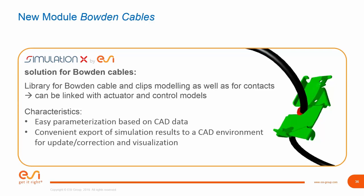The Bowden cable solution includes libraries for Bowden cable modeling, clip modeling, and modeling contact between the Bowden cable and other geometries. As is typical in SimulationX, it is not a standalone module — you can link it to actuators and controls for an overall view of system behavior. The module also features easy parameterization based on CAD data: you can import Bowden cable CAD data into SimulationX, run the simulation to evaluate the static rest position, and export the validated results back to your CAD environment.